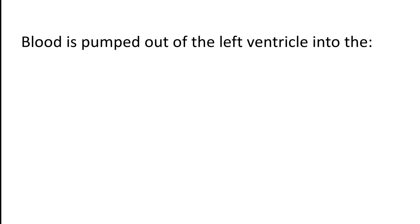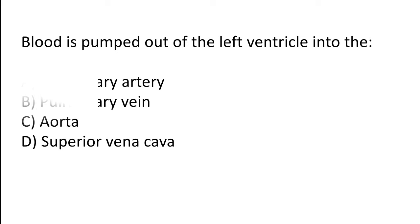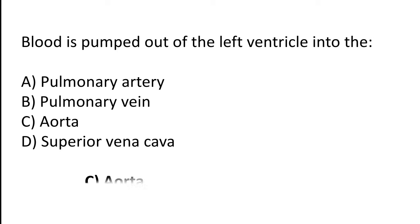Blood is pumped out of the left ventricle into which vessel? (a) Pulmonary artery, (b) pulmonary vein, (c) aorta, (d) superior vena cava. The correct answer is option C. Blood is pumped out of the left ventricle into the aorta.